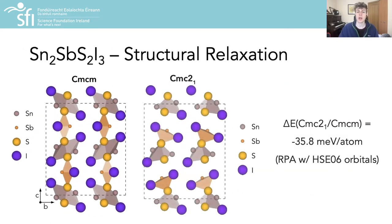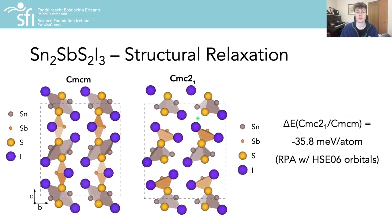However, our calculations indicated that the Cmc2₁ phase was in fact the ground state arrangement for this material, even going to a very high level of theory by invoking the random phase approximation to the correlation energy, which is often considered a gold standard for the prediction of relative formation energies for material polymorphs.